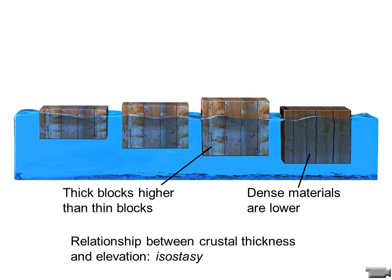The relationship between crustal thickness and elevation is called isostasy — I-S-O-S-T-A-S-Y. That simply means the thicker the crust, the higher the elevation; the thinner the crust, the lower the elevation.